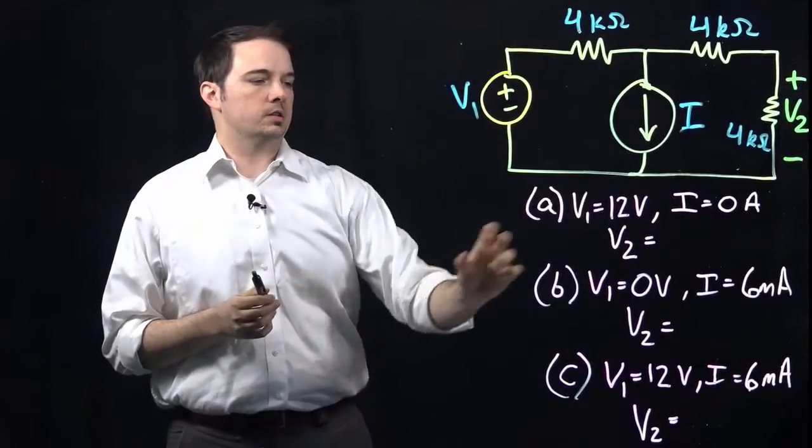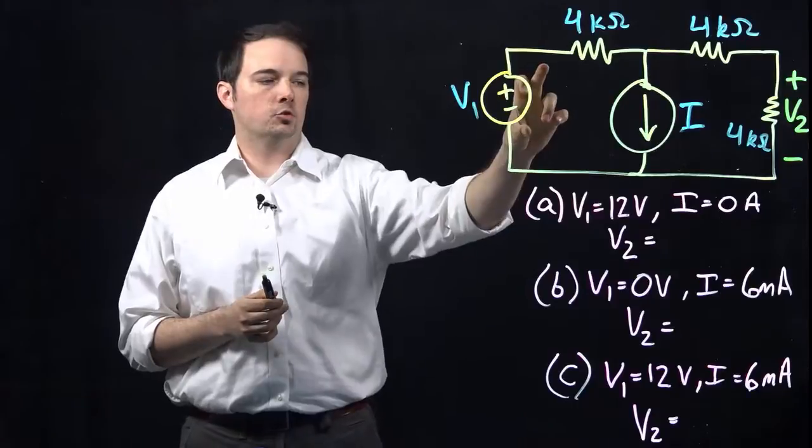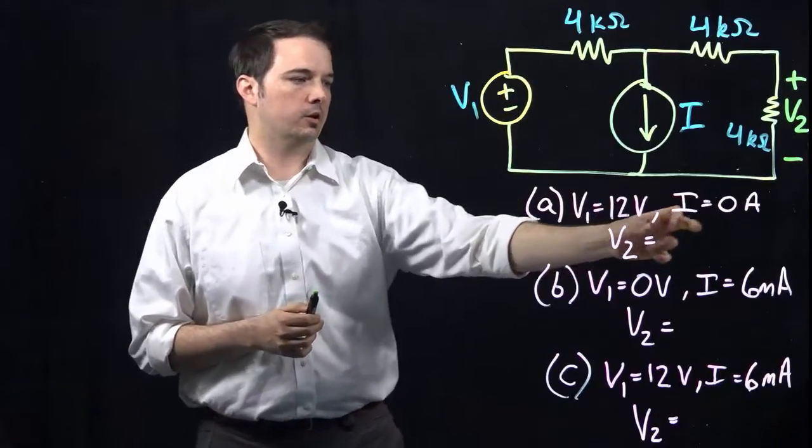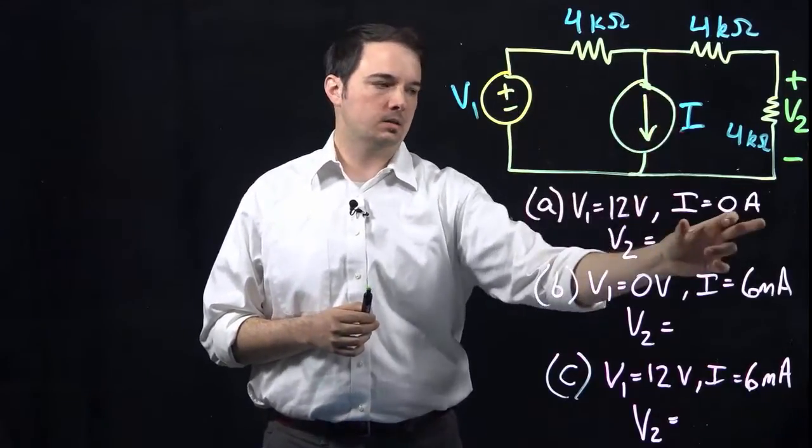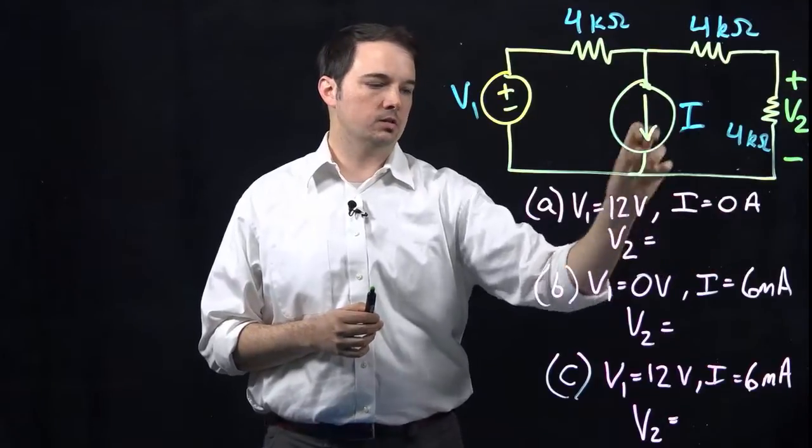For part A, it tells us that if my voltage of this voltage source V1 is equal to 12 volts, and my current source I is simply equal to zero amps, then what is the voltage V2?